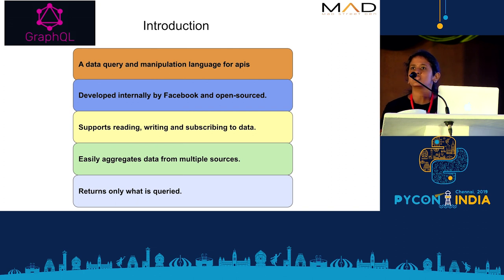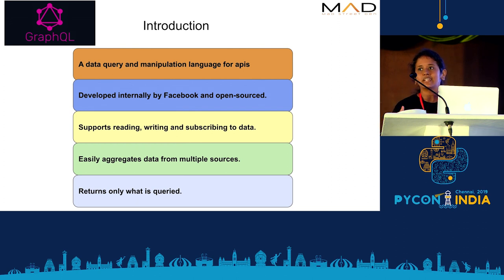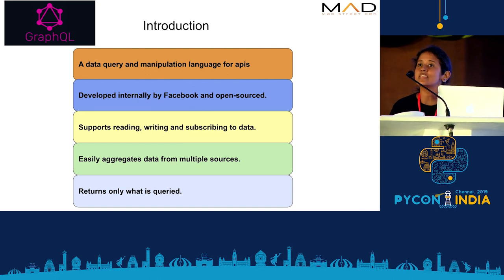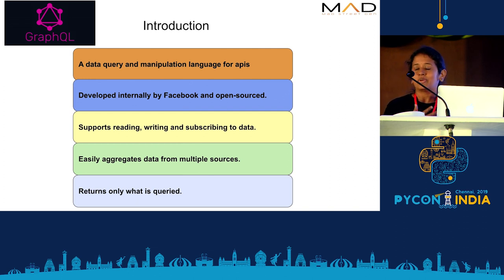So how did GraphQL come into existence? Back in 2012, when Facebook was revamping their mobile applications, they figured out they had a lot of issues — the mobile applications were crashing and there were a lot of performance issues. When they were trying to fix these, they found a lot of inconsistency between the data returned by the server and the data actually required at the client end. There came a requirement for an API that would give power to the client to just query for whatever data it requires, hoping to solve their performance problems.